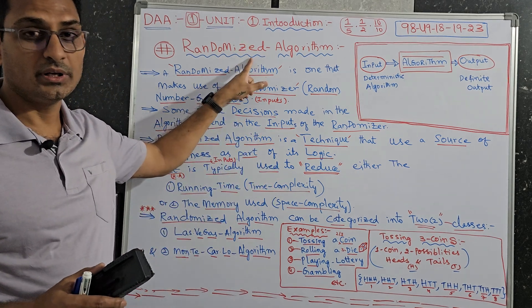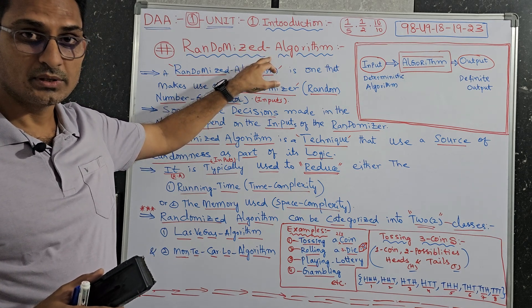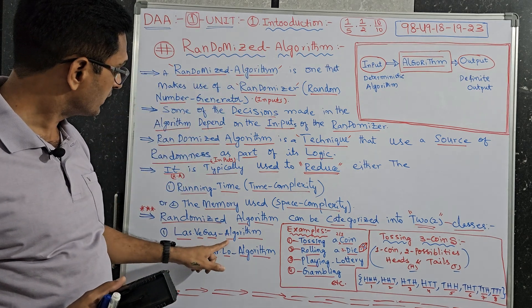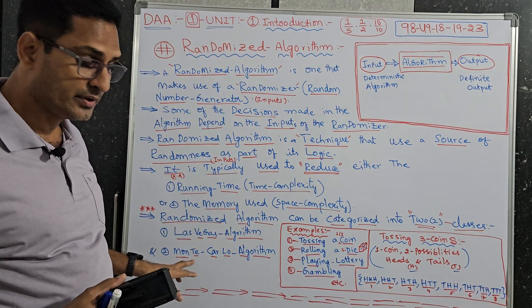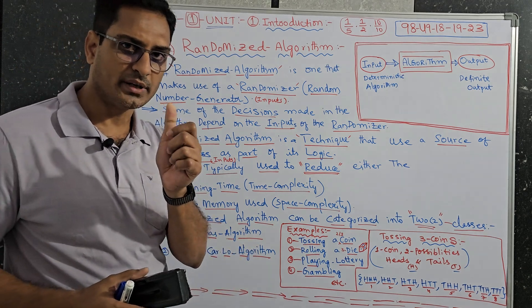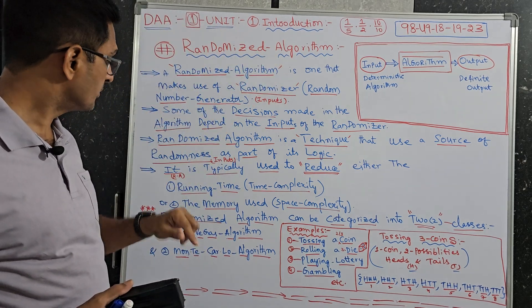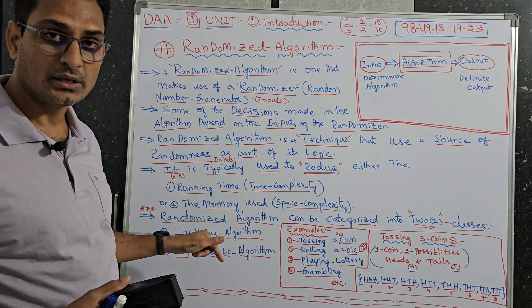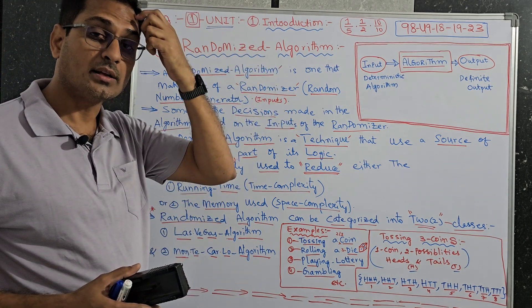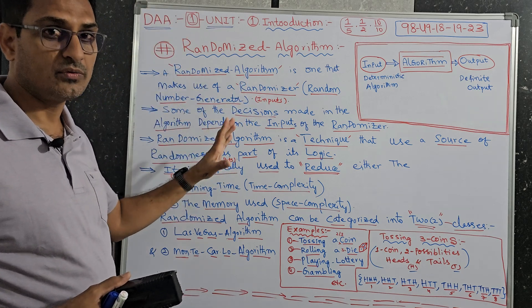Because in this topic only, Randomized Algorithm is a topic given in the syllabus. That was asked three times. Explain about Las Vegas Algorithm and the difference between Monte Carlo Algorithm. There is a slight difference. So listen carefully.